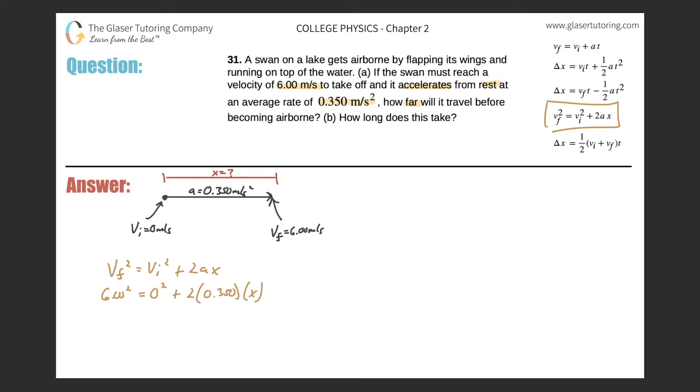So let's do the math. Six squared is going to be 36.0 because I need three sig figs. And then it's two times 0.350. So that's simply going to be 0.700, and that's times x. And then divide out the 0.700 from both sides.